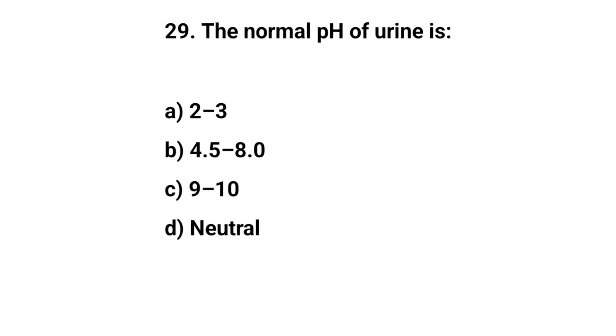Question No. 29. The normal pH of urine is? The right answer is B: 4.5 to 8.